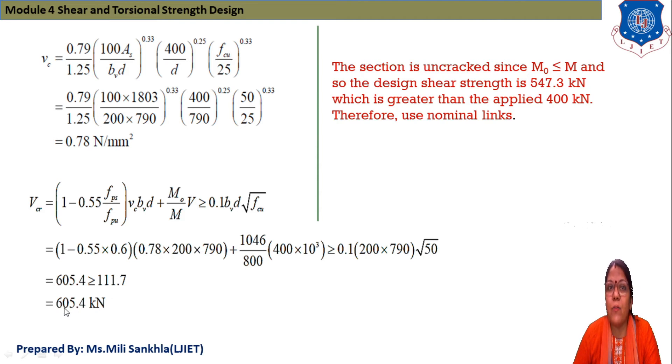After putting all values in this equation we get vcr equals 605.4 kN which is greater than or equal to 111.7. The section is uncracked since M₀ is less than M and design shear strength 547.3 kN is greater than applied 400 kN. So there is use of nominal link, there is no need to design shear reinforcement.